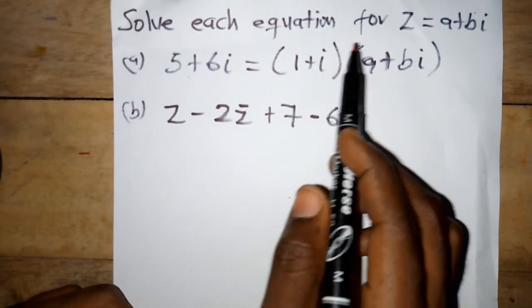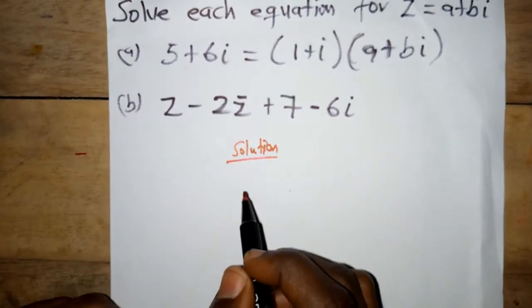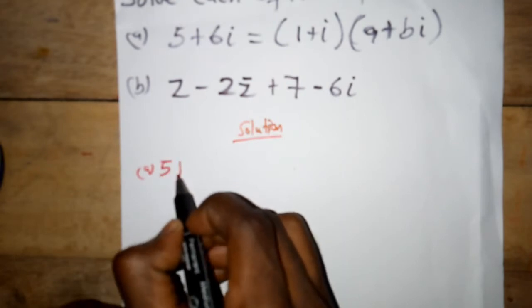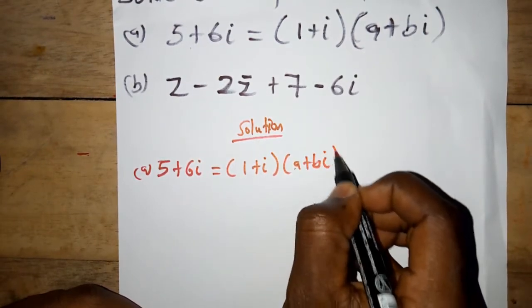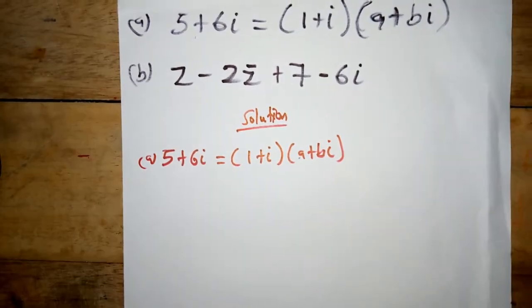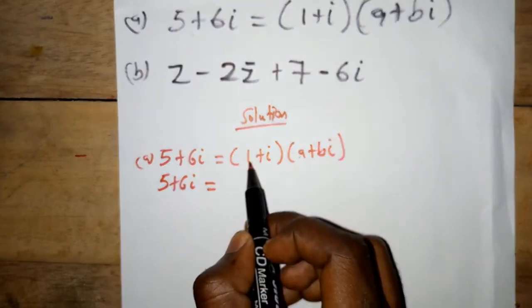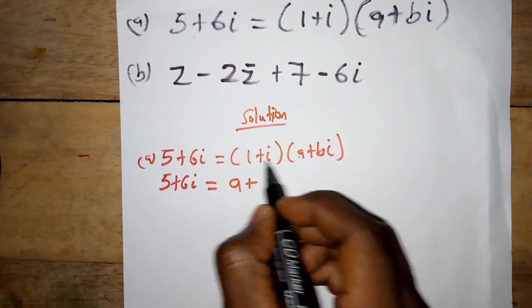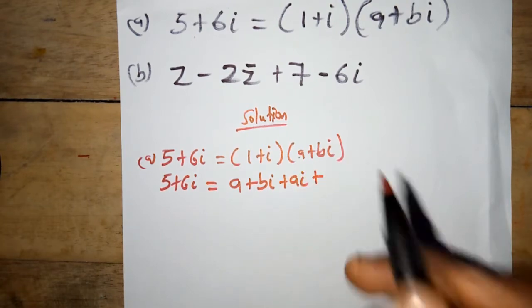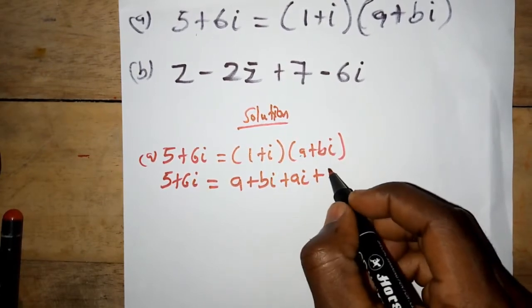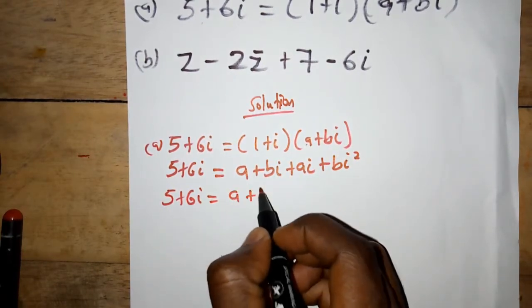So we have five plus six i being equal to the whole of one plus i multiplied by a plus bi. Expanding, we have one times a as a, one times bi as bi, then i times a as ai, and i times bi as bi squared. So we have five plus six i being equal to a plus bi plus ai plus bi squared.